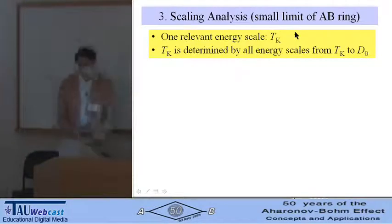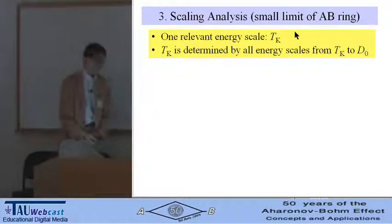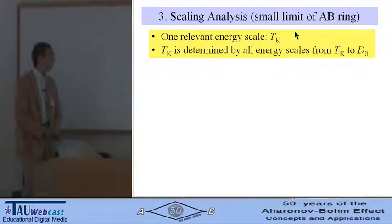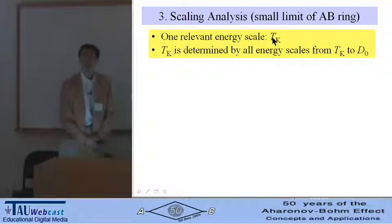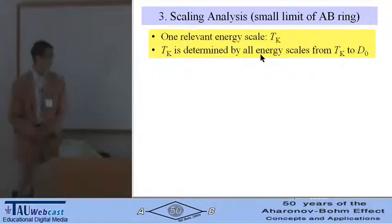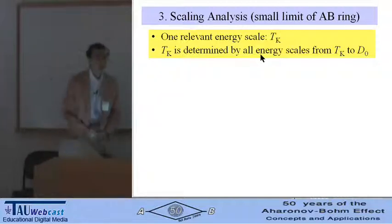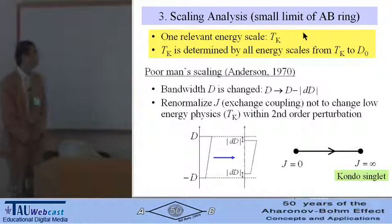Now examine the scaling analysis using the reduced model. The remarkable properties of the Kondo effect are there is only one relevant energy scale, Kondo temperature Tk. Tk is determined by all the energy scales from Tk to the bandwidth. To capture the Kondo physics, Anderson's poor man's scaling is useful.